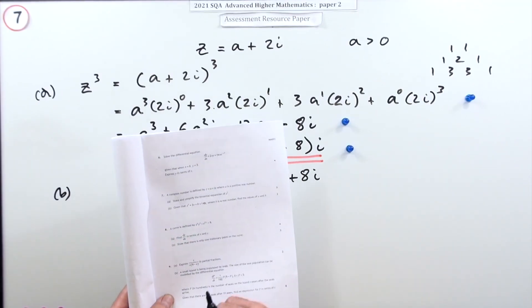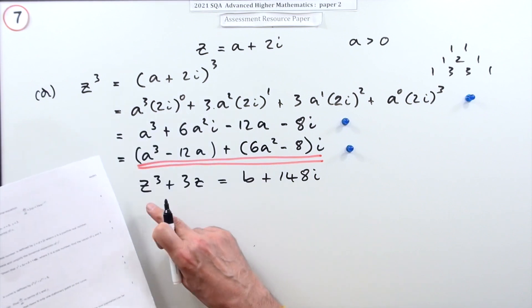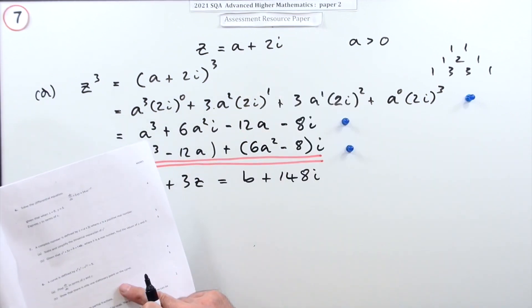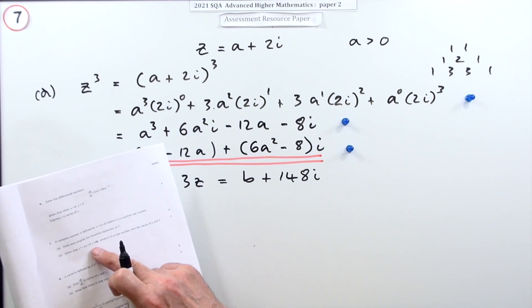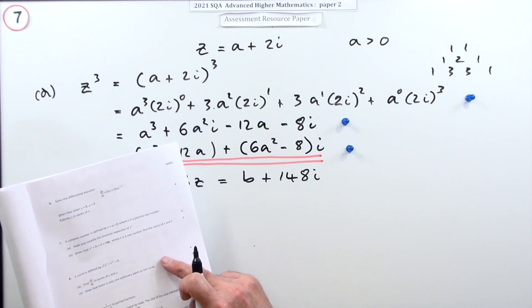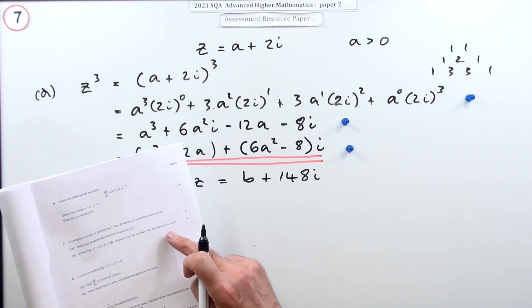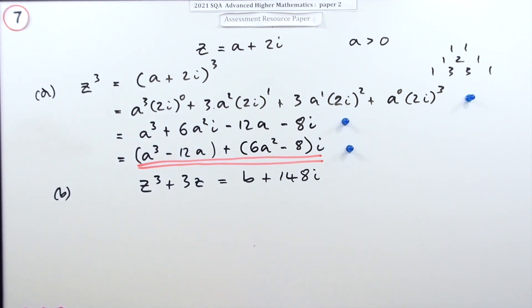Now in part b, it says given that z cubed plus 3z equals b plus 148i, where b is a real number, find the values of a and b. Well, you're going to find out what this comes to. I think we could just do the real part of it and pick it out, and add on three of them.